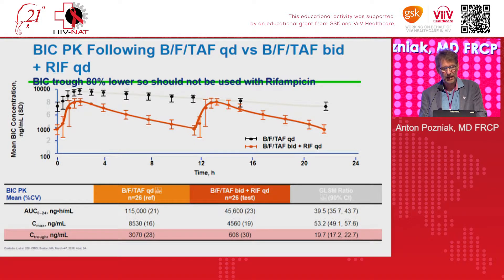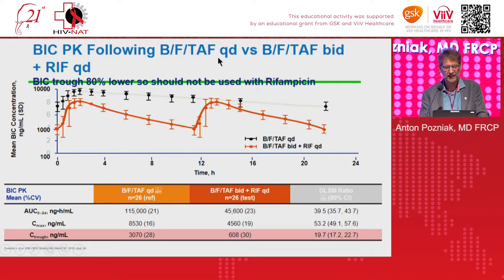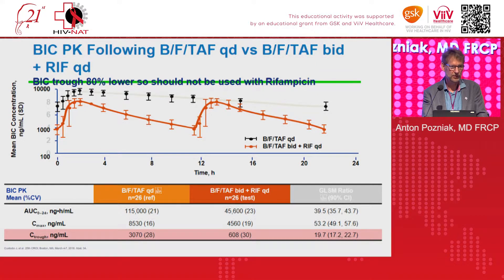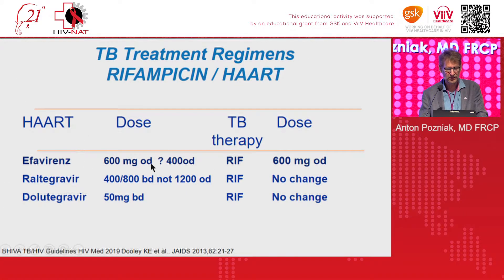Bictegravir cannot be used with rifampicin — trough concentrations drop far too low. Additionally, Bictegravir is co-formulated with TAF, which has its own TB interaction issues. So to summarize: with rifampicin we have Raltegravir 400 or 800mg BD, or Dolutegravir 50mg BD. Otherwise, efavirenz 600mg — or possibly 400mg based on PK data. Not Raltegravir 1200mg once daily, and not Dolutegravir once daily without further clinical data.